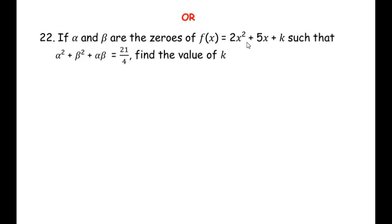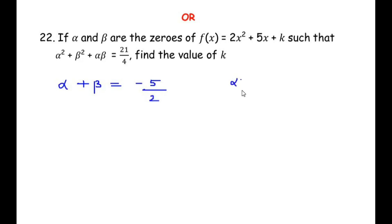Alpha and beta are zeros of this polynomial, so let us relate the zeros to the coefficients. The sum of zeros is alpha plus beta equals minus b over a, which is minus 5 over 2. The product of zeros is alpha times beta equals c over a, which is k over 2.